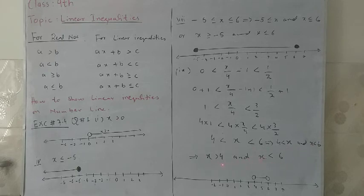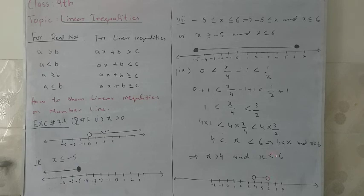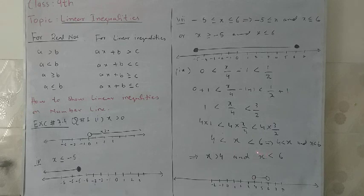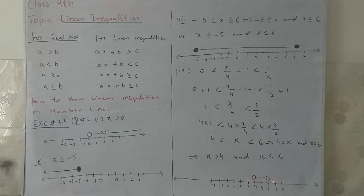Now, how to show these numbers on the number line? We will draw 4 with a hollow circle because 4 is not included — x is greater than 4, so numbers greater than 4 lie on the right hand side. For x less than 6, we will use a hollow circle for 6 and show numbers less than 6 on the left hand side. Overall, all real numbers lying between 4 and 6 are represented on the number line with two hollow circles on 4 and 6 with a line drawn between them. Thank you, students.